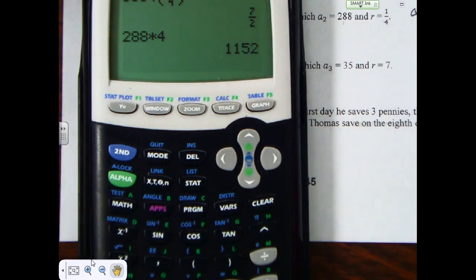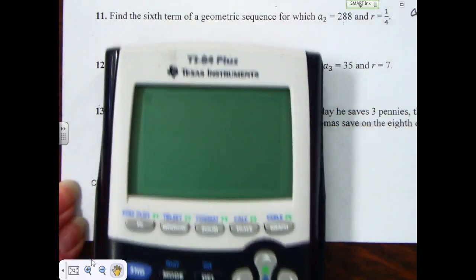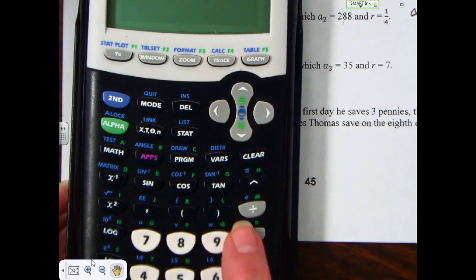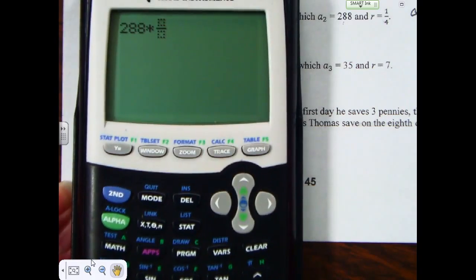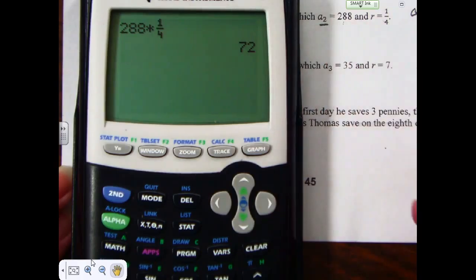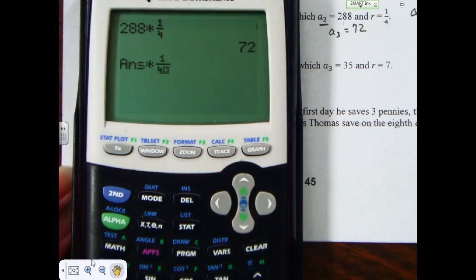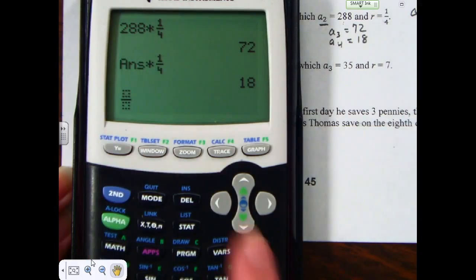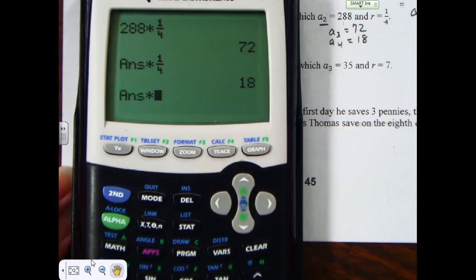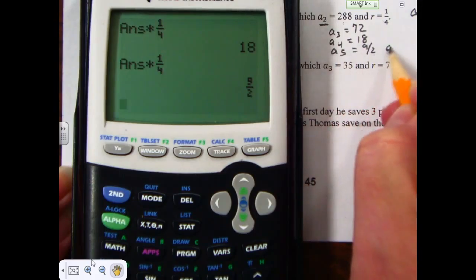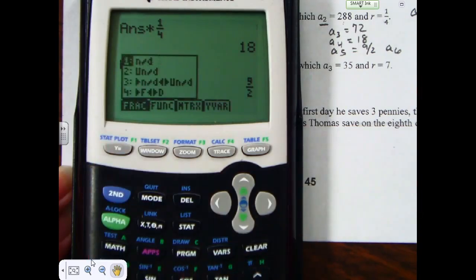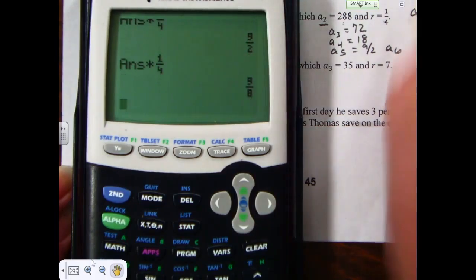But, I can also do what I know about geometric sequences, and say, I'm looking for the sixth term. So, I can do 288 times 1 fourth, and that gives me which term? The 288 was the second term. So, the third term is 72. The fourth term would be times 1 fourth again. The fourth term would be 18. The fifth term, multiply that by 1 fourth, and the fifth term would be 9 halves. Multiply that by 1 fourth, and my sixth term is 9 eighths.